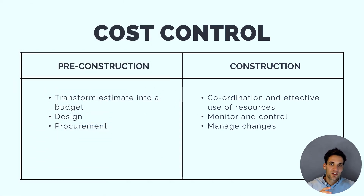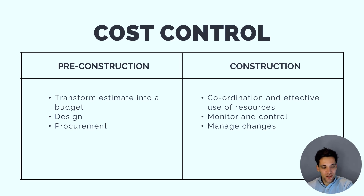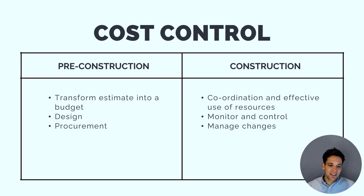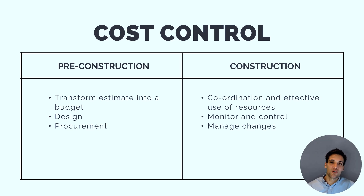Cost control can be broken down into two subsets: pre-construction cost control, which I like to think of as setting up the project for success, and construction cost control. Within pre-construction cost control, we take our estimate, turn it into a budget, and manage any design and procurement activities to ensure we're not overspending. Then we move into the construction phase where we spend the majority of our budget, effectively coordinate and use resources, monitor and control spending versus work completed, and manage change.